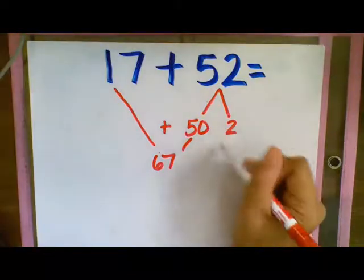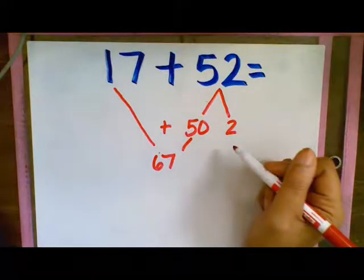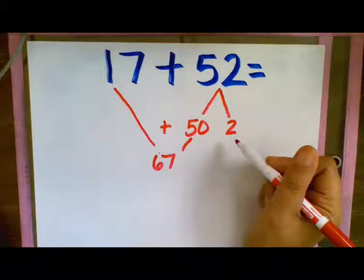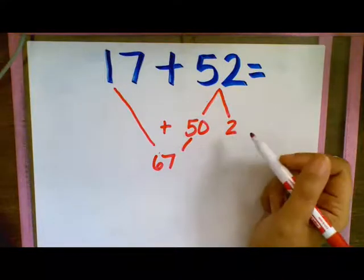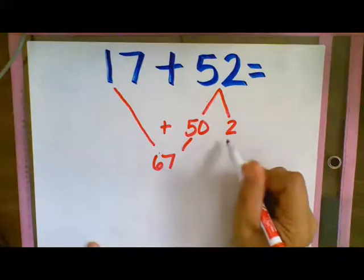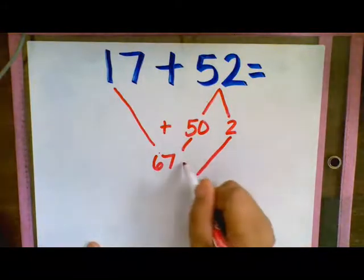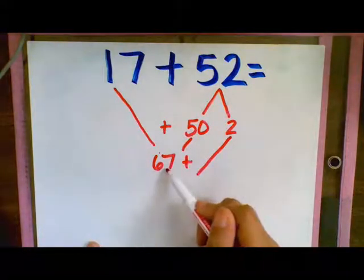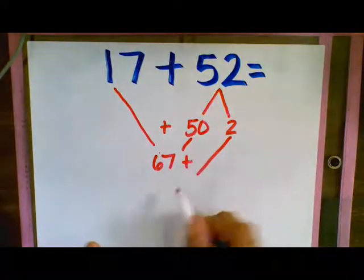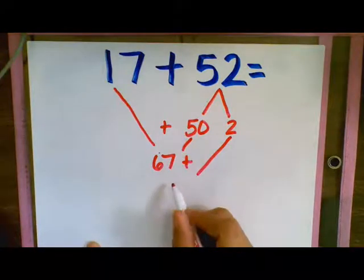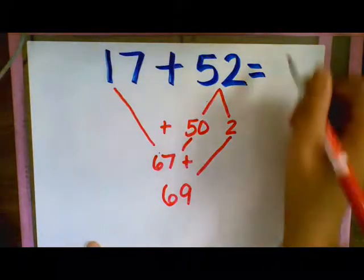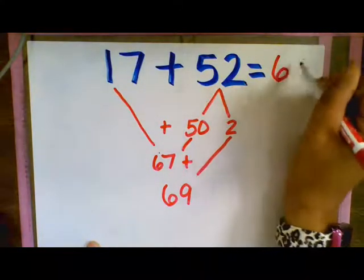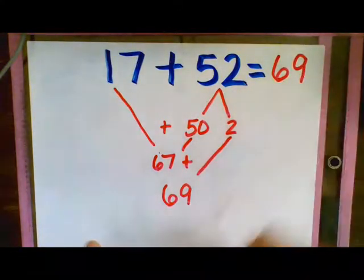Now our 2 is broken apart pretty small. We don't need to break this apart any further like we did in the other problem where we broke apart our 5 with a 3 and a 2. This is pretty small so we don't need to do any breaking apart for this one. I'm just going to bring that down and put a plus sign there so I know that I'm adding my 67 plus my 2. So 67 plus 2 is going to give us 69. So our final answer 17 plus 52 is 69.